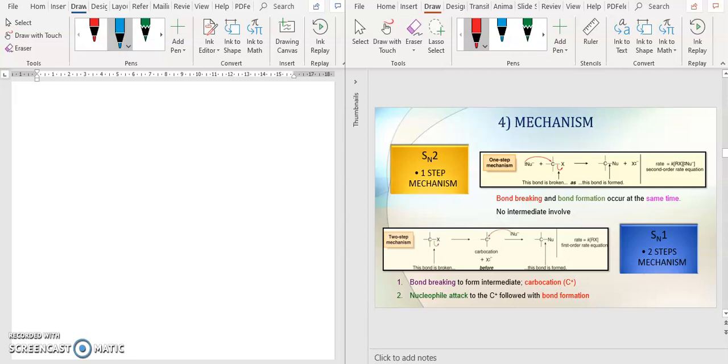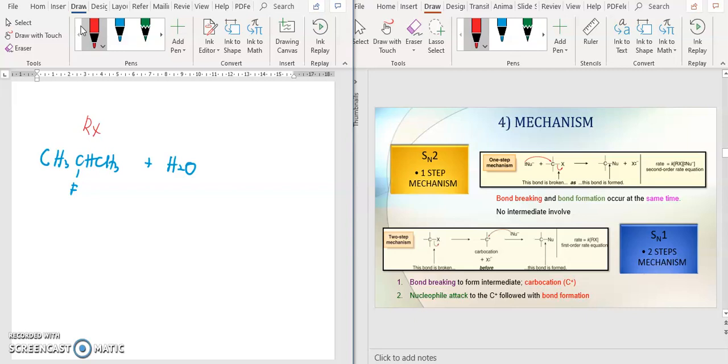For example you have one question, CH3 CH CH3 F plus with H2O. What is important? First one, you have to identify whether your RX is primary, secondary, tertiary, or methyl halide. Locate this one and then check how many attachments - one, two, two - so secondary. When secondary alkyl halide, meaning that in terms of substitution reactions you can undergo SN1 or SN2 reactions because secondary can undergo both reactions.